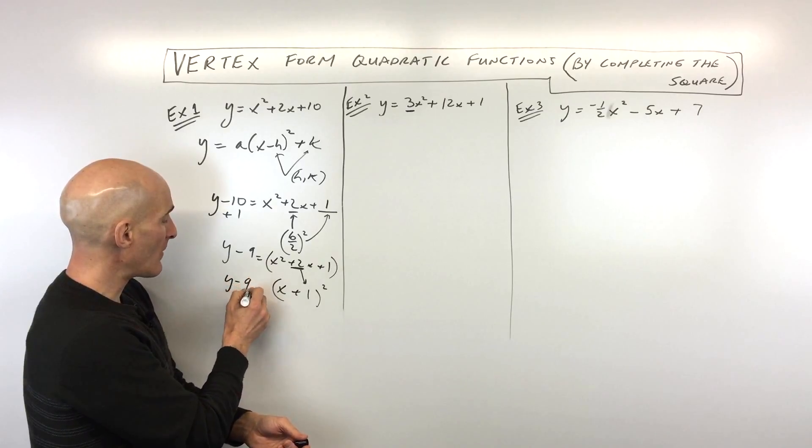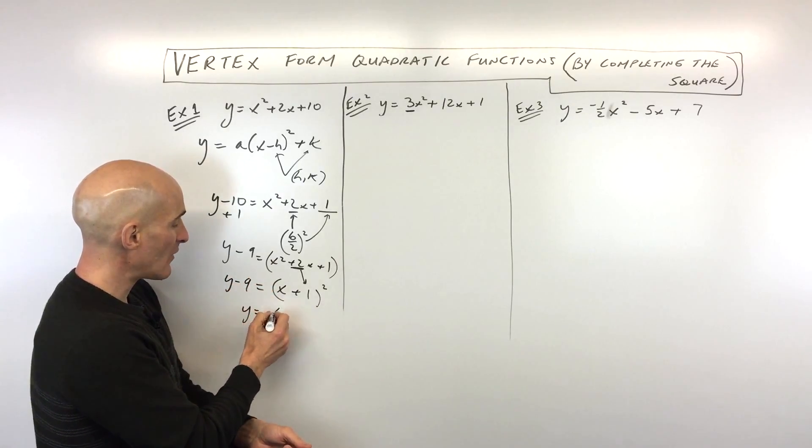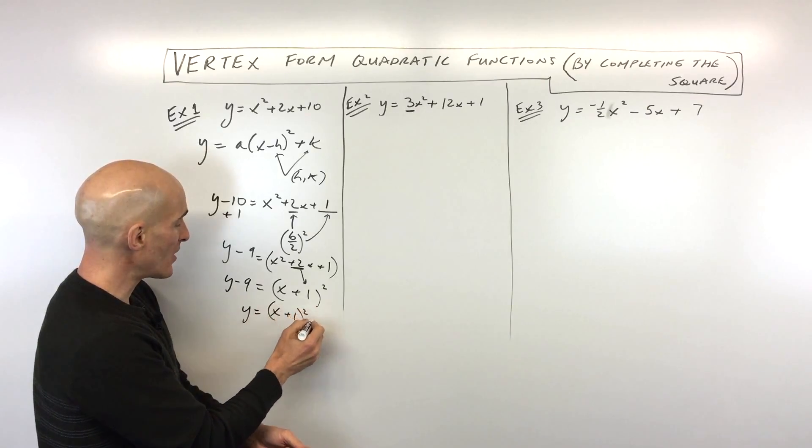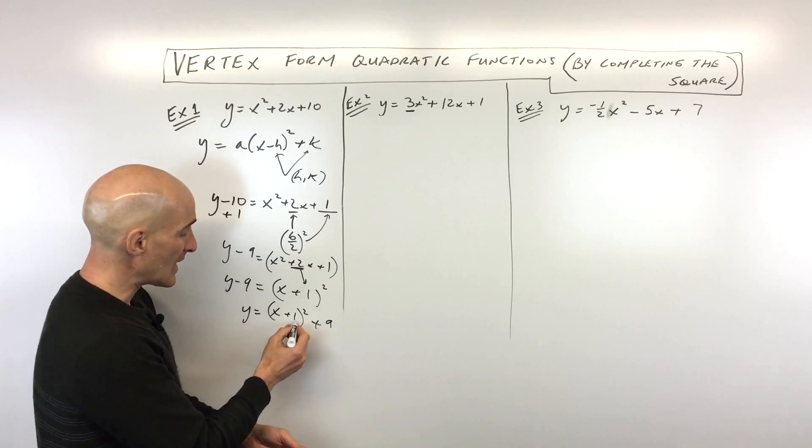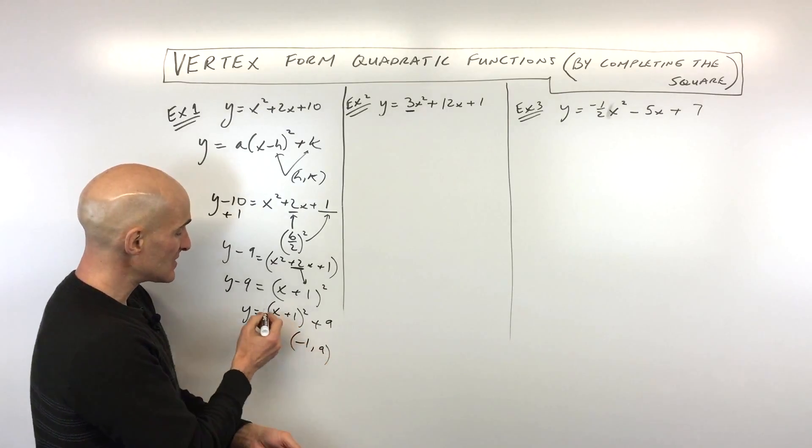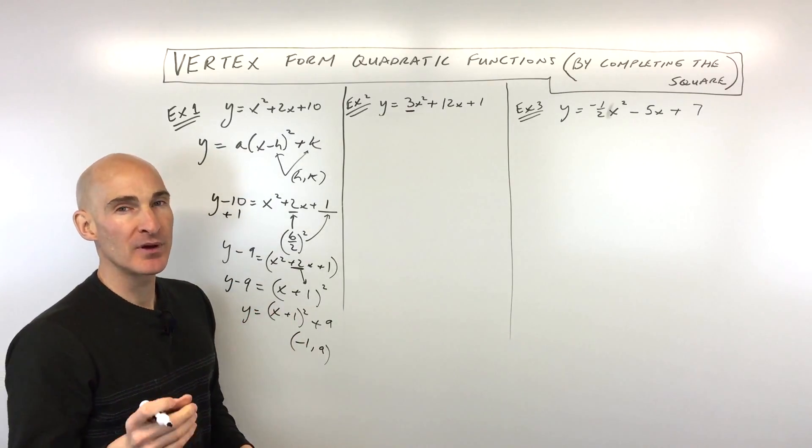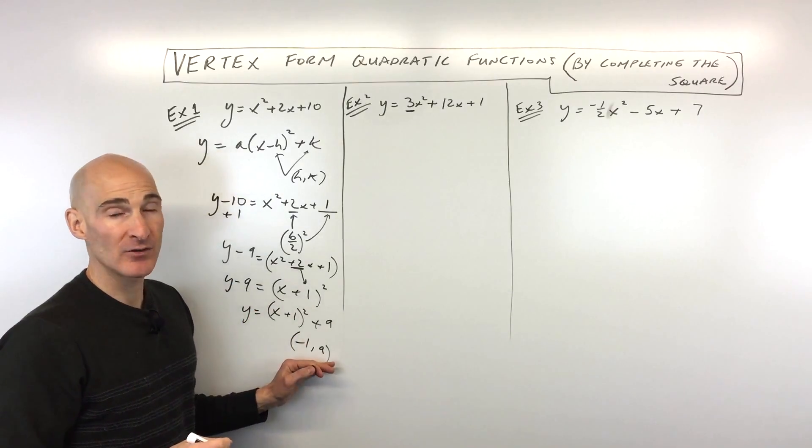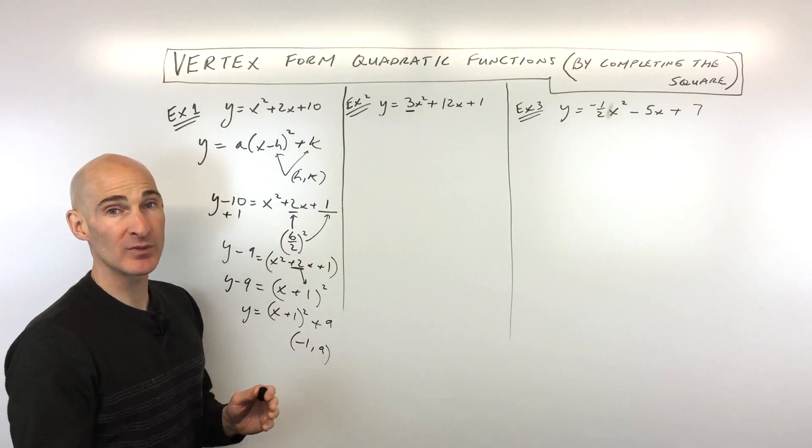And then we're just going to bring down the y minus 9. And then last step is we're just going to add 9 to both sides. So we have y equals x plus 1 squared plus 9. Now we know what the vertex is. It's going to be negative 1, see the opposite of 1, comma 9. That's our vertex. And you can see our a value is actually positive 1. So we know our parabola is opening up like that. But you can check out some of my other videos about graphing given the vertex form. But here we're just writing it into the vertex form by completing the square.